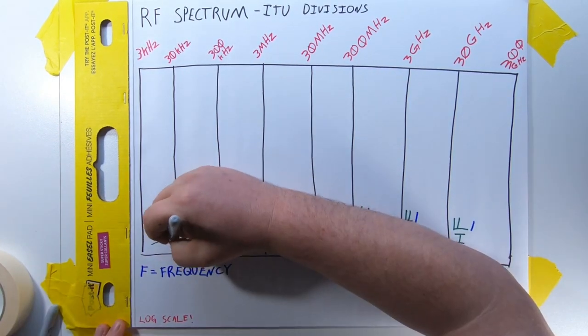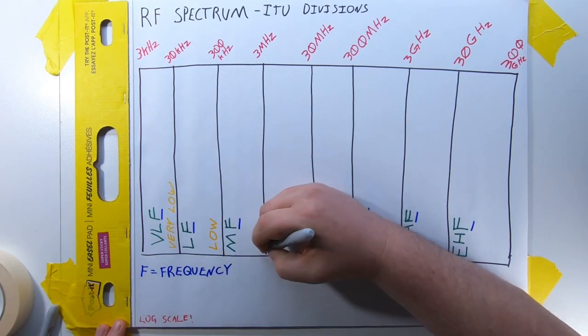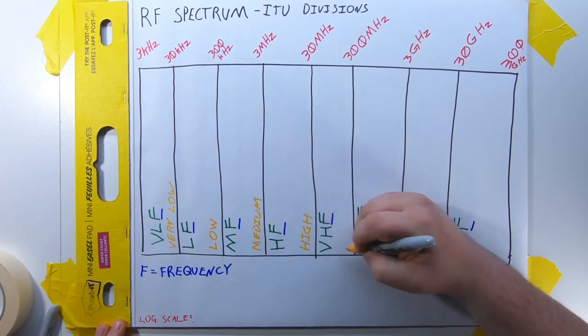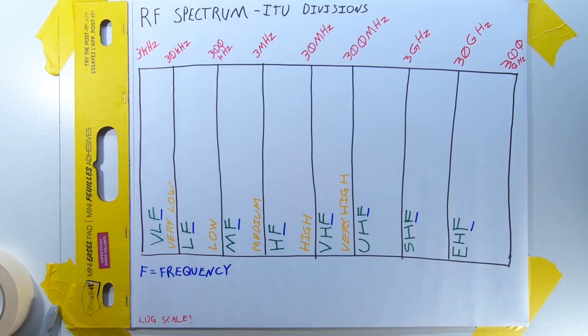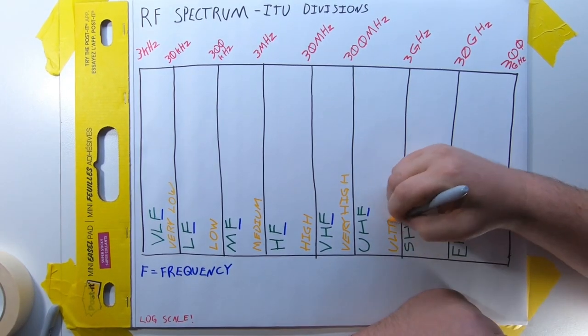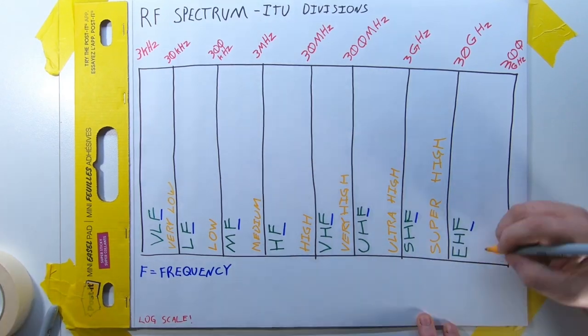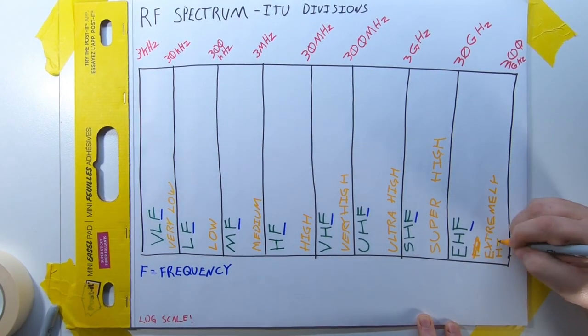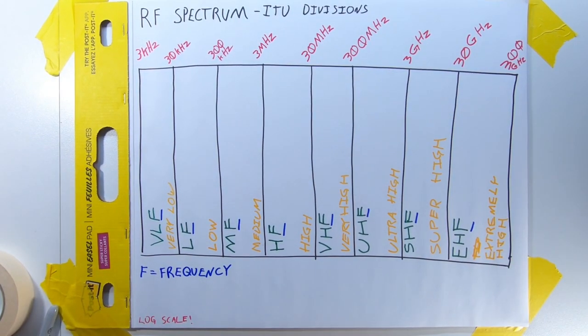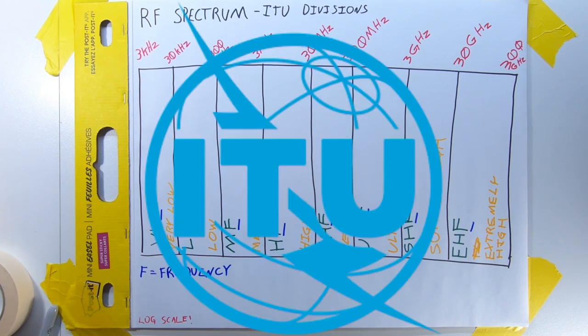In order from lowest to highest, it is very low frequency, low frequency, medium frequency, high frequency, very high frequency, ultra high frequency, super high frequency, and extremely high frequency. It needs to be said that the ITU came up with this plan back when everything above a few hundred kilohertz was considered pointless, which explains the horrendous adjective inflation we've got going on here. Who's the ITU? We'll talk about that later.